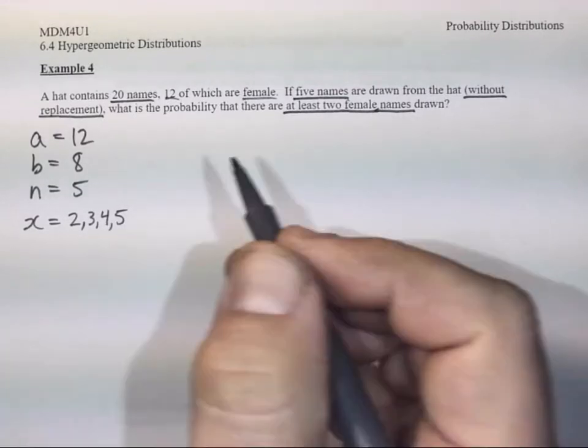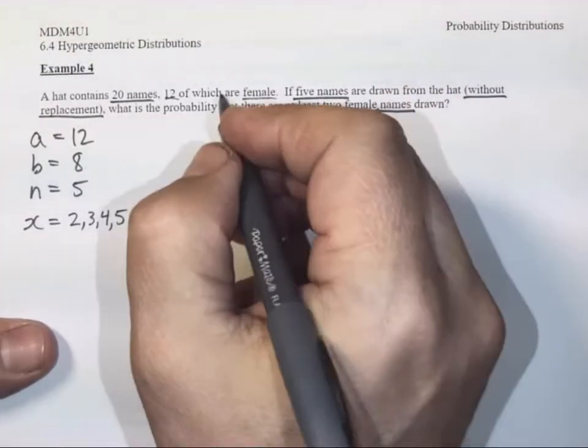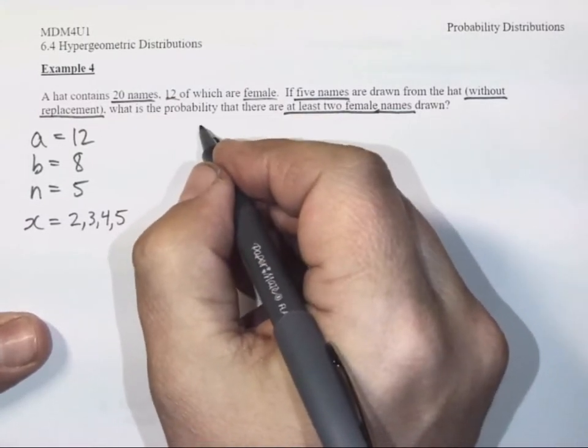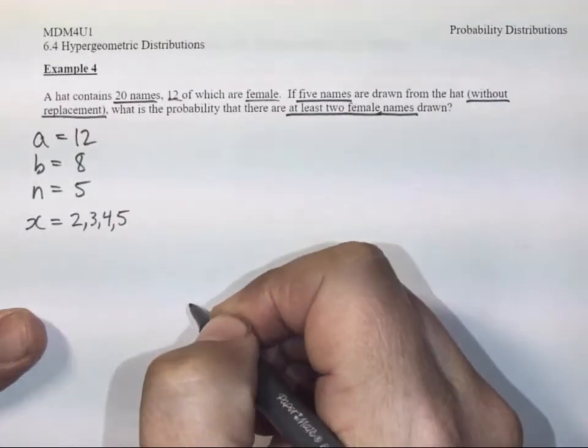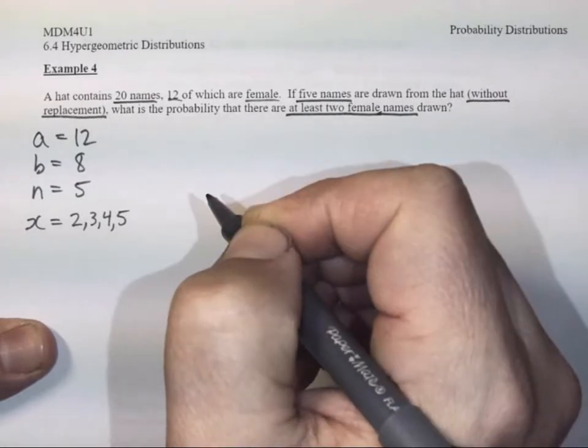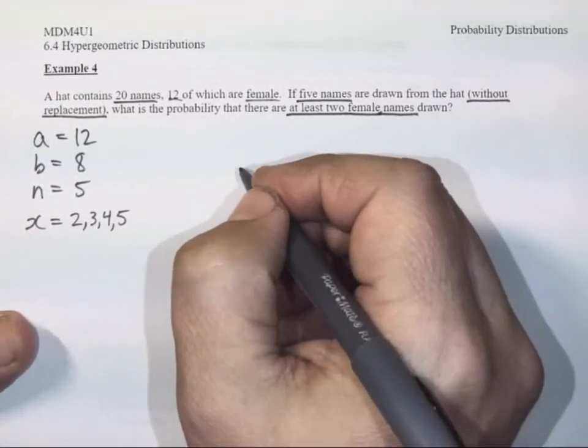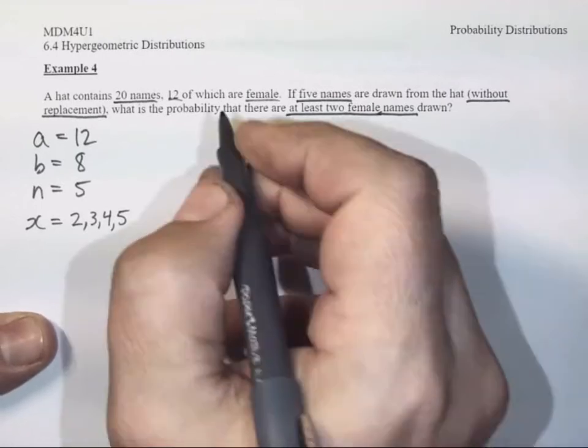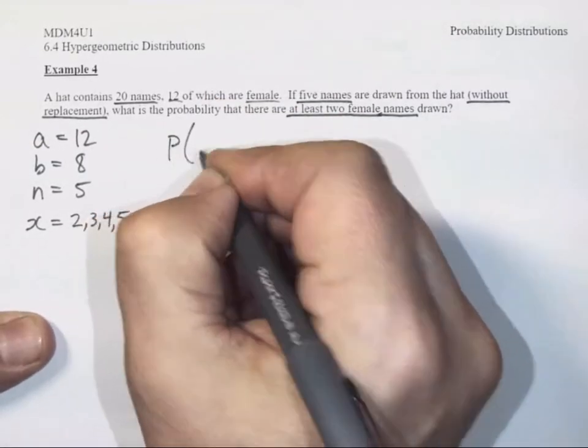If I think about it, in our table, in our distribution table where X is 0, 1, 2, 3, 4, 5, the only rows or values we don't want here are 0 and 1. That does not mean at least 2.